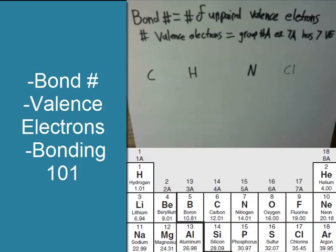But first as a quick review, since it's been a little while since we've had to do this, bond number is the number of unpaired valence electrons an atom has, and to find those unpaired valence electrons first you need to know how many valence electrons it has, and that's going to equal its group number while it has A at the end of it.